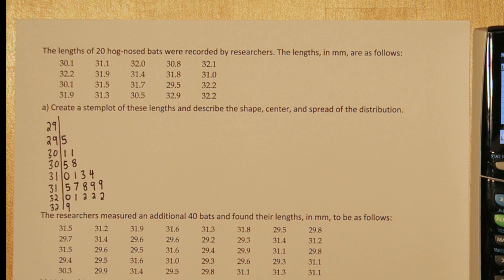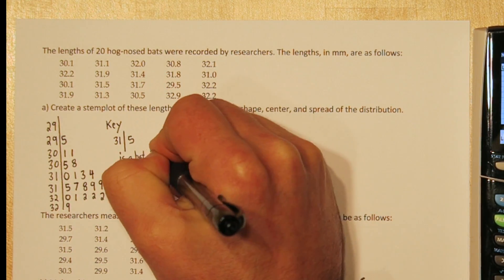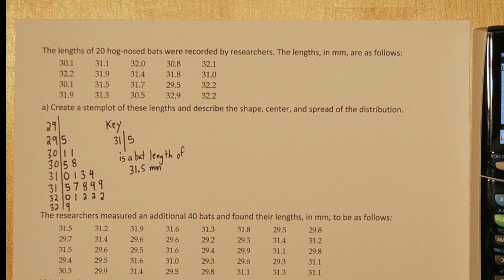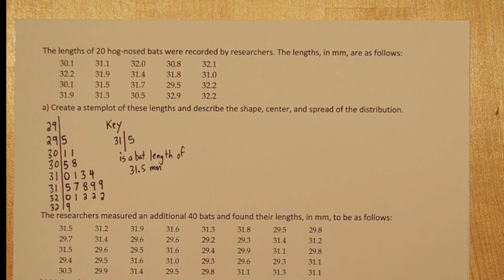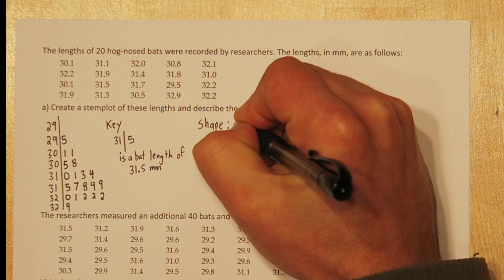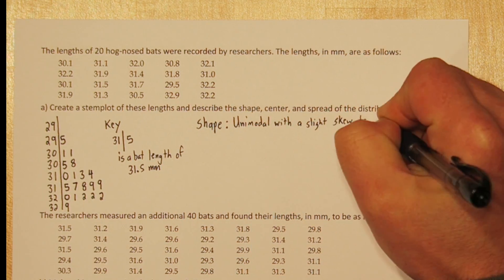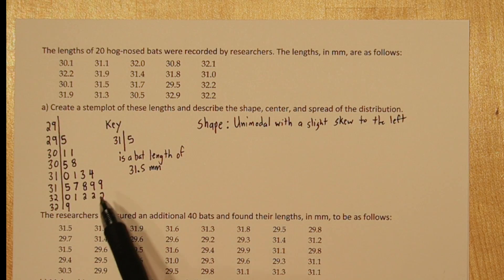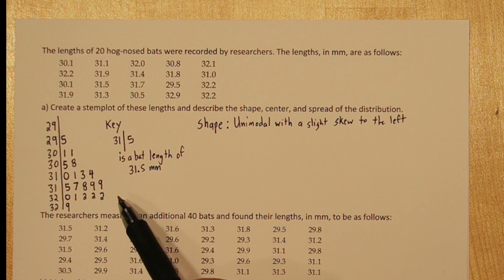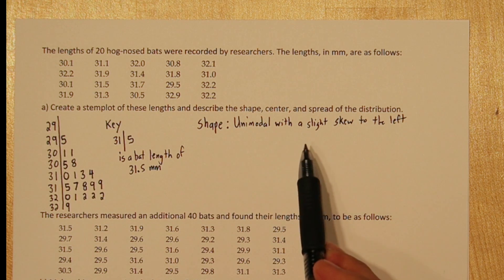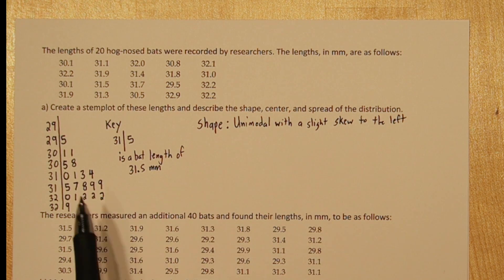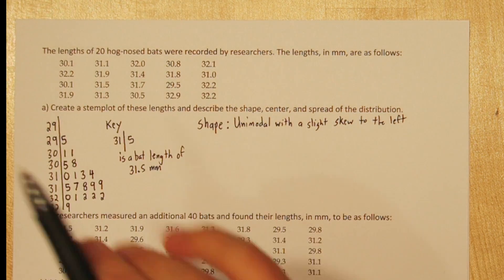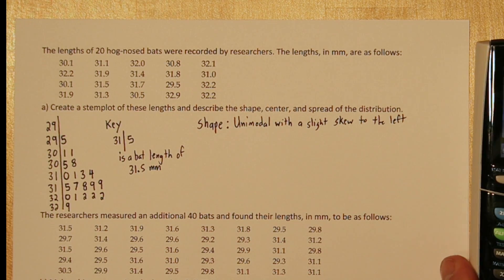Now no stem plot is complete without a key, so let's add a key here. So for the key, I just chose a value, 31.5, and demonstrated how we could read the stem plot to translate it to a bat length. Now it says to describe the shape, center, and spread of the distribution. The shape of our distribution is unimodal, because it has one peak, and it's also skewed slightly in this direction. So we're going to say a slight skew to the left, which if we rotated our graph that way, it would be a skew to the left.